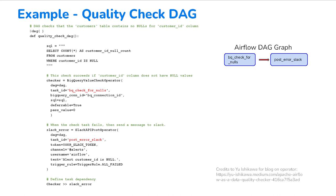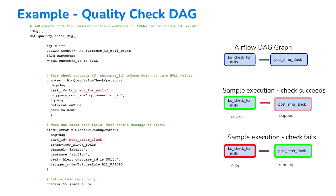You can see the code here. This is a Google Cloud provider operator — the BigQuery value check operator. How you should think about this operator is that it checks whether the SQL statement you provide returns a value exactly equal to the pass value. If it is equal, the task will succeed; otherwise, it'll fail. The trigger rule for the Slack post operator is set to 'failed', so if and only if the previous task fails, you get notified — because your engineers would want to know about the quality shortcoming.